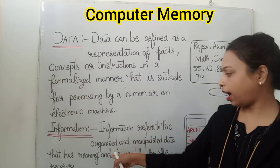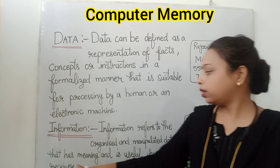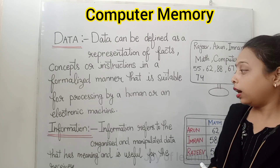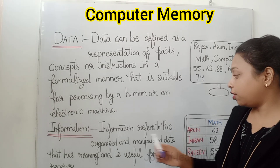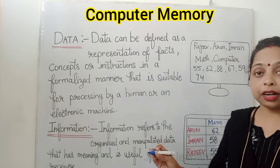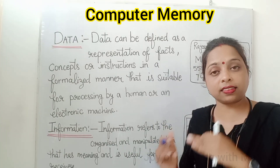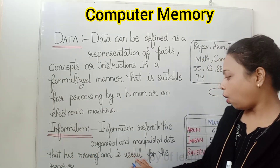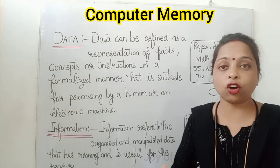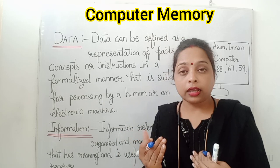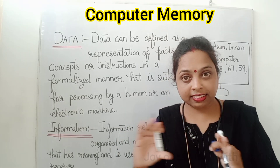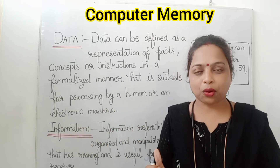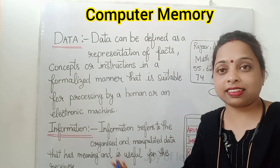Information refers to the organized and manipulated data that has meaning and is useful for the receiver. Manipulate means to put it in a proper form. If your teacher writes your marks in the report card and gives it to you, that is information and you are the receiver.